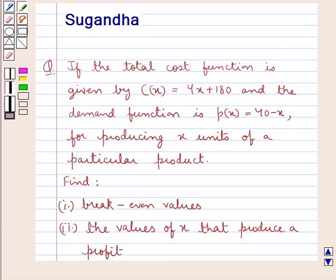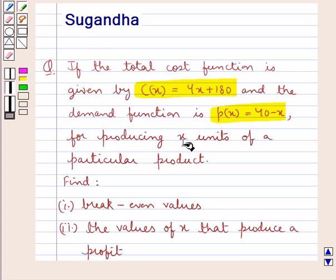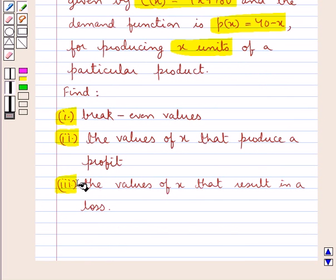Hello and welcome to the session. In this session we discuss the following question: if the total cost function is given by C(x) equal to 4x plus 180, and the demand function is given by p(x) equal to 40 minus x for producing x units of a particular product, find first the break-even values, second the values of x that produce a profit, and third the values of x that result in a loss.